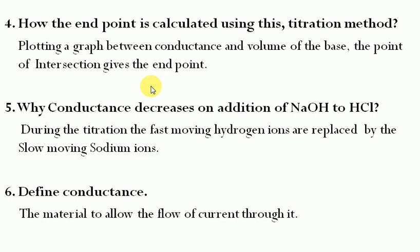Why does conductance decrease on addition of sodium hydroxide to HCl? During the titration, the fast-moving H⁺ ions are replaced — that is, neutralized — by slow-moving Na⁺ ions through salt formation. Therefore, during addition of NaOH to HCl, the conductance decreases.